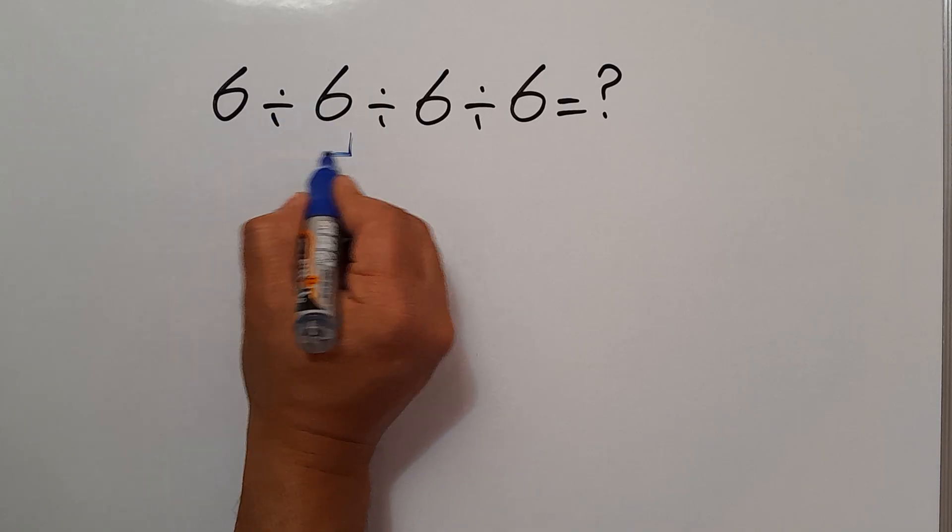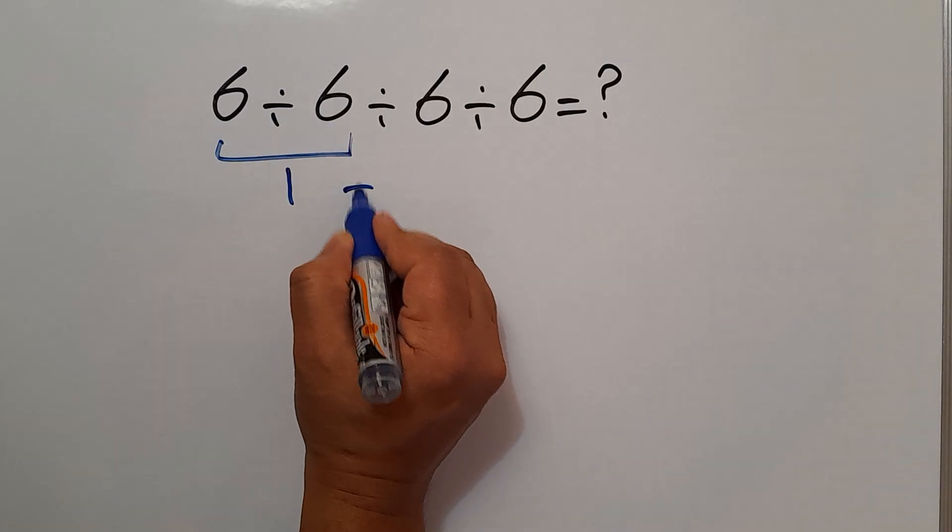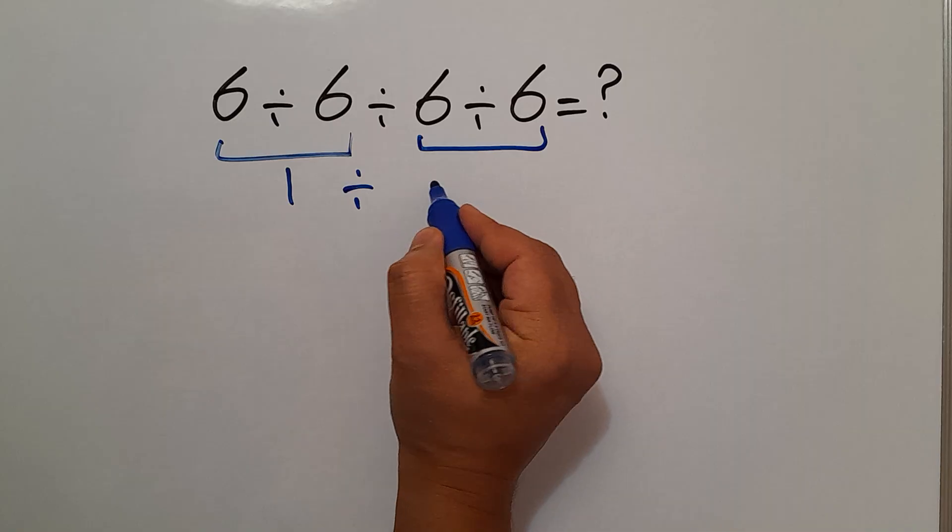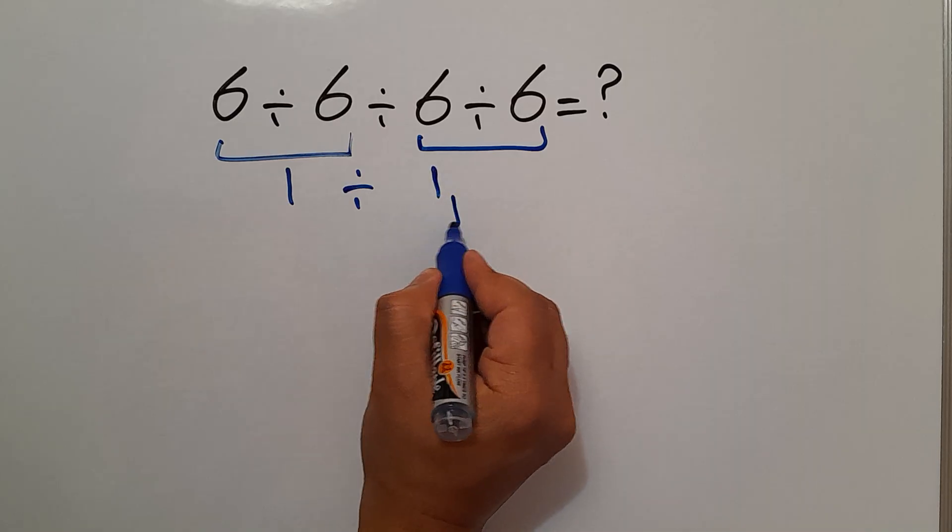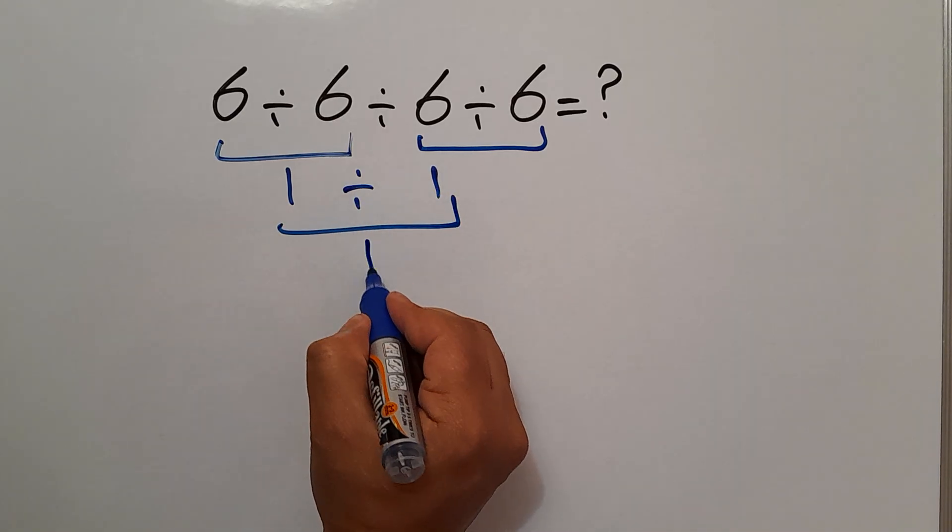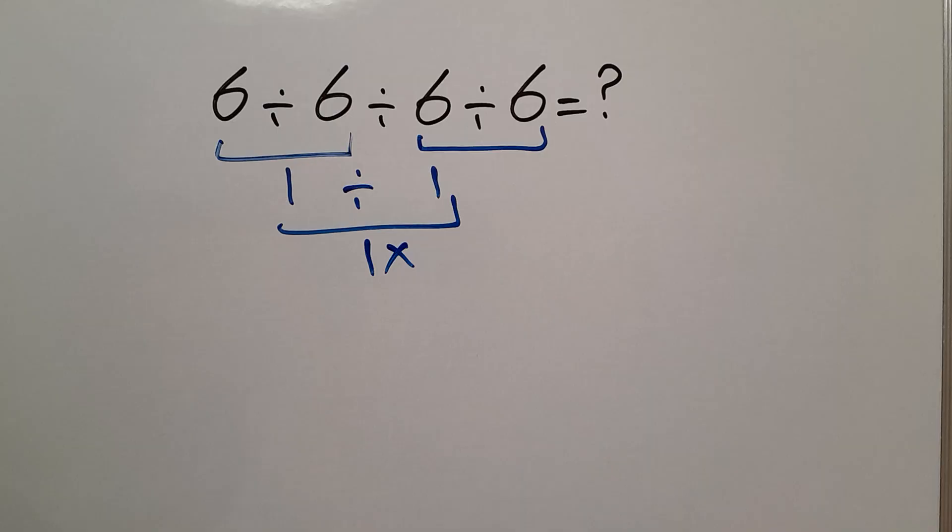6 divided by 6 gives us just 1, and 1 divided by—again we have here 6 divided by 6 which equals 1—and 1 divided by 1 equals 1. But this answer is not correct.